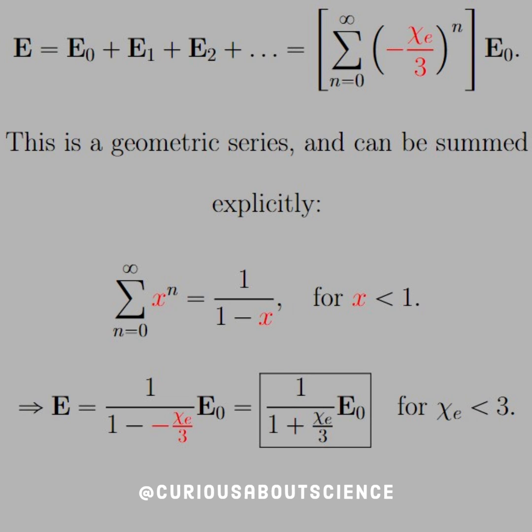So we see the terms in red are interchangeable. So we go ahead and substitute that in, and we're left with this expression here, applying the condition chi E has to be less than 3.